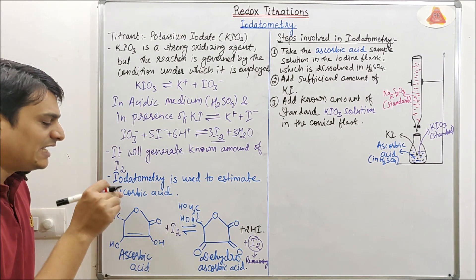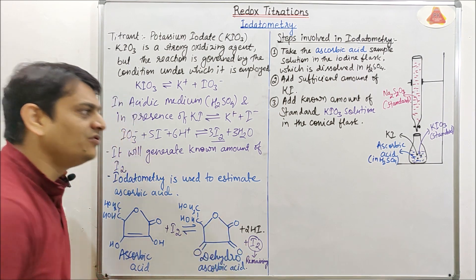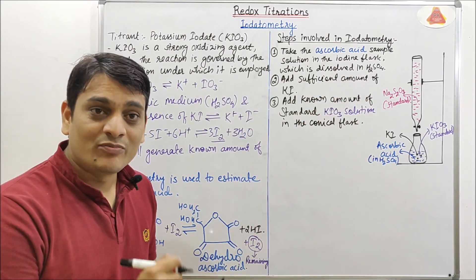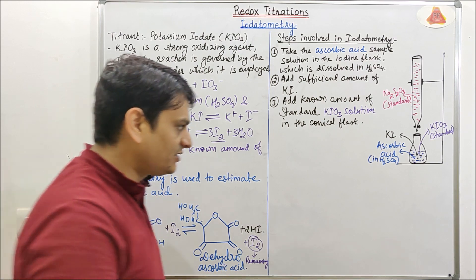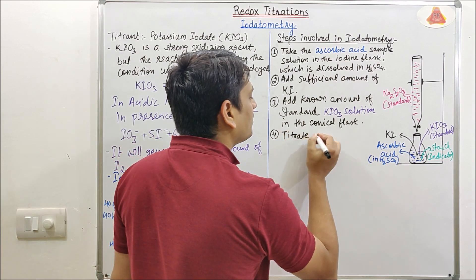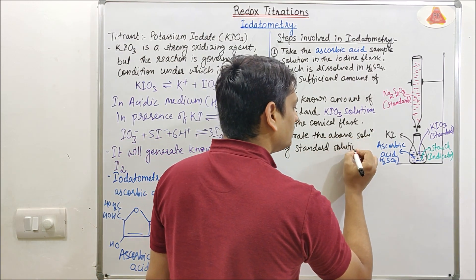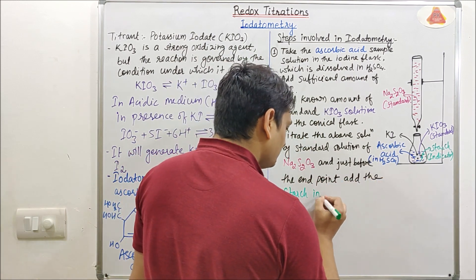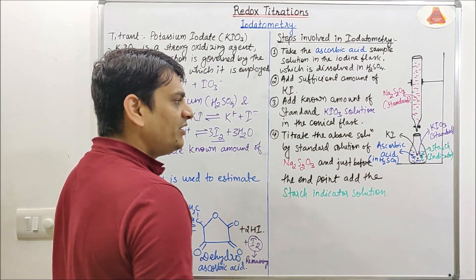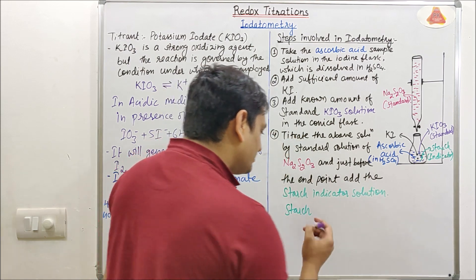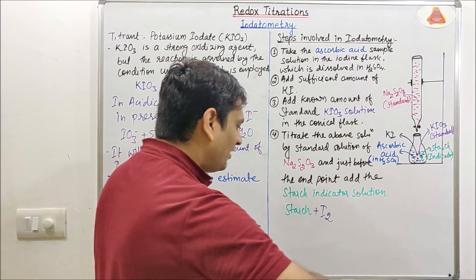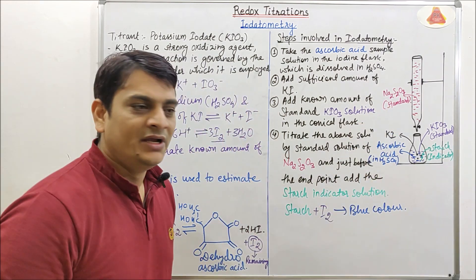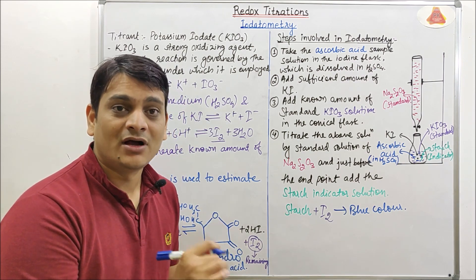Now we need to determine the amount of I2 remaining. To do this, we titrate using standard Na2S2O3 (sodium thiosulfate). Just before the end point, we add starch as indicator. The starch indicator reacts with I2 and forms a blue color. At the end point, all remaining I2 reacts with standard sodium thiosulfate and the solution becomes colorless, indicating completion of the reaction.